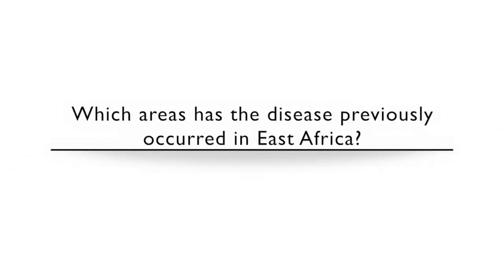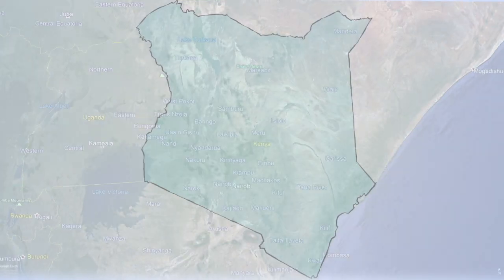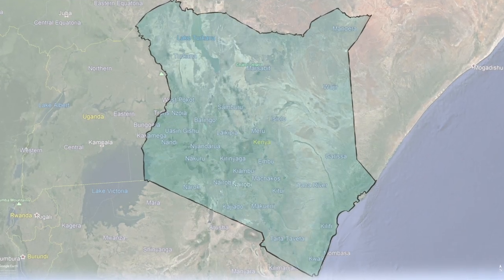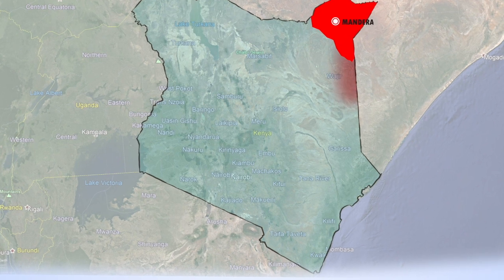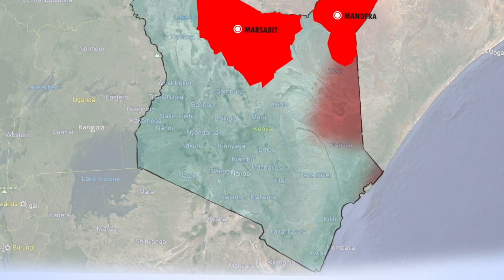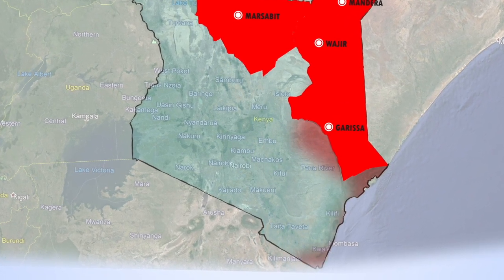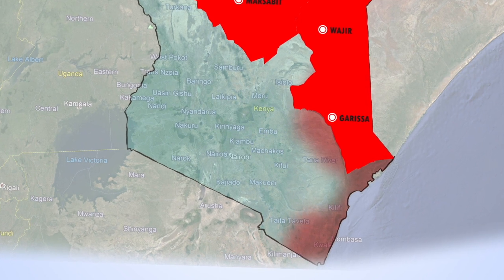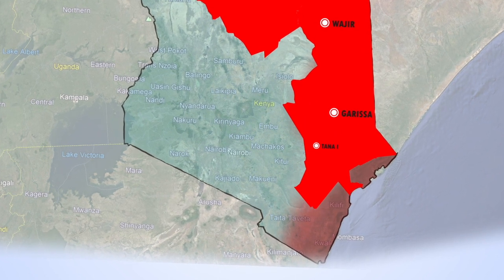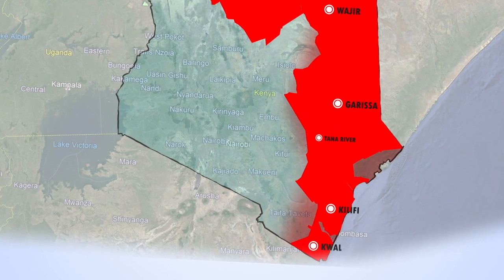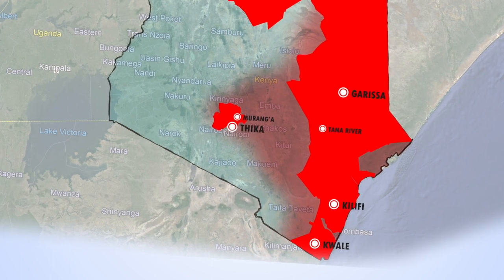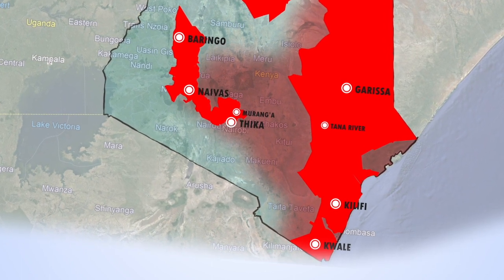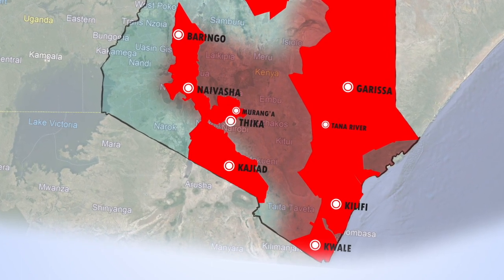Which areas has the disease previously occurred in East Africa? In Kenya, areas that are prone to Rift Valley Fever outbreaks include Mandera, Marsabit, Wajir, and Garissa counties in the north and northeastern parts of the country, Tana River, Kilifi, and Kwale counties on the coast, Muranga and Thika in central, and Baringo, Naivasha, and Kajiado in the Rift Valley.